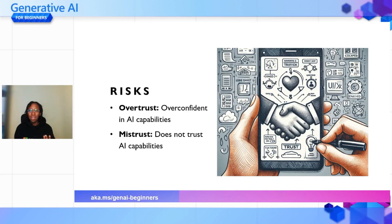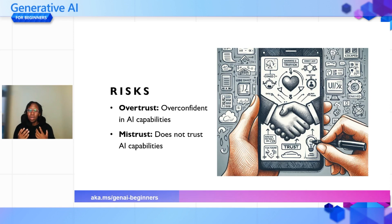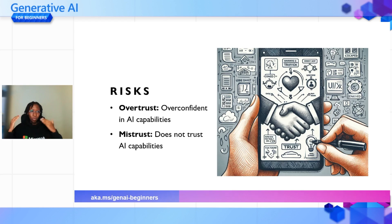There are two risks when it comes to trust: over-trust and mistrust. Over-trust is when a user is overconfident in AI capabilities and doesn't even verify the output — for example, just using generated quizzes without checking, which is a problem because generative AI is not 100% perfect. Mistrust is when a user comes in thinking 'I don't trust what AI does.' Both are opposite extremes, and we want users to find the right level of trust.